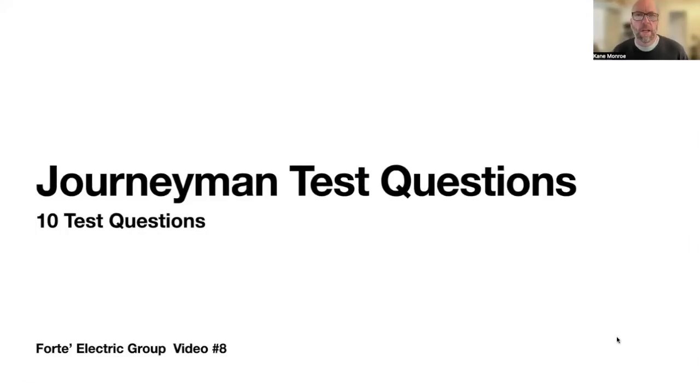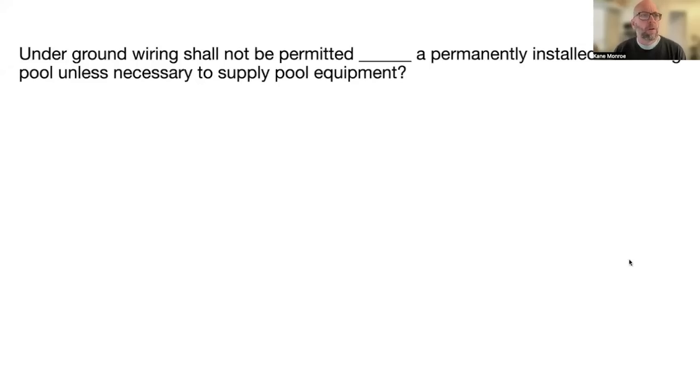Alright guys, let's get started on another journeyman test question video. This is video number eight for you, so let's get going. Underground wiring shall not be permitted blank a permanently installed swimming pool unless necessary to supply pool equipment. The answer is under 680.11b.